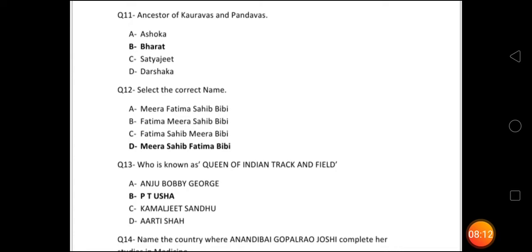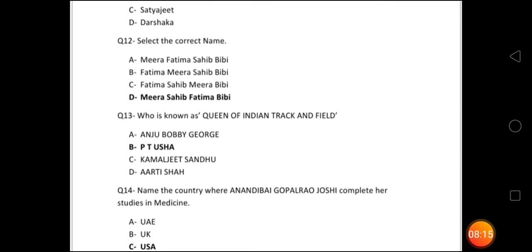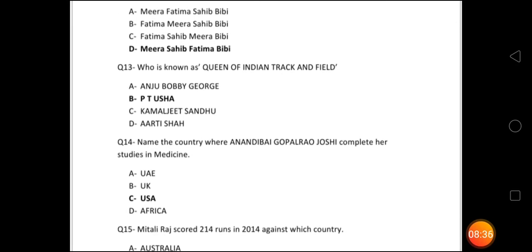Question number 12: Select the correct name. The name was given in an improper order, and you had to arrange it correctly. The correct answer is Option D: Meera Sahib Fatima Bibi. Many children did well, but mostly children made mistakes here. Question number 13: Who is known as the Queen of Indian track and field? The answer is PT Usha.